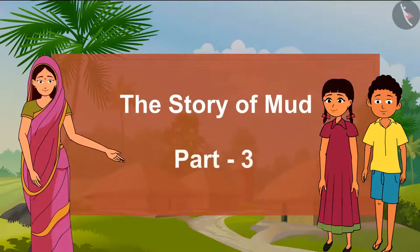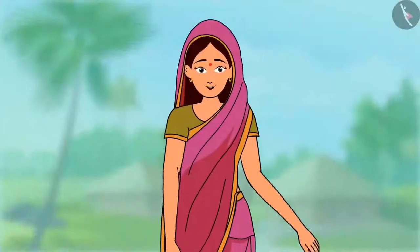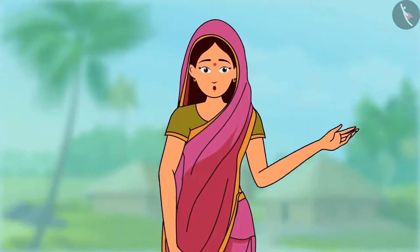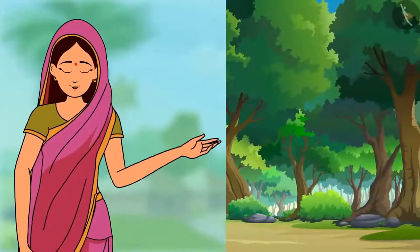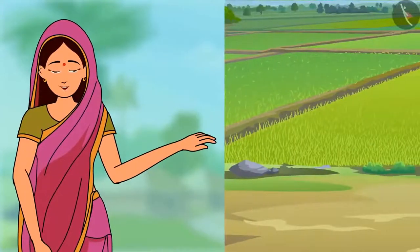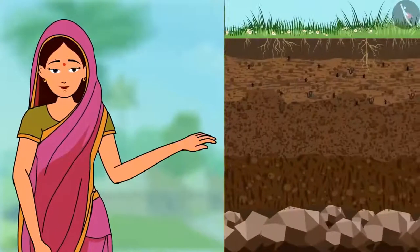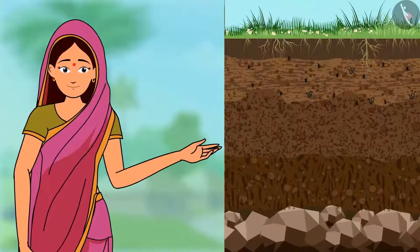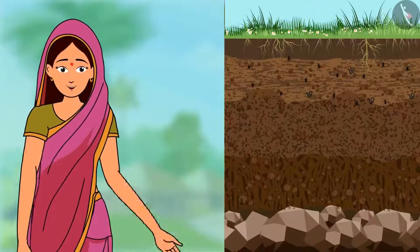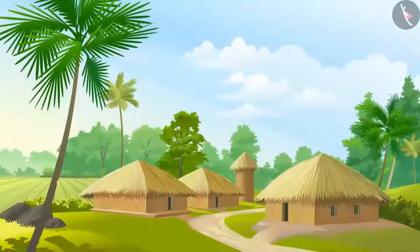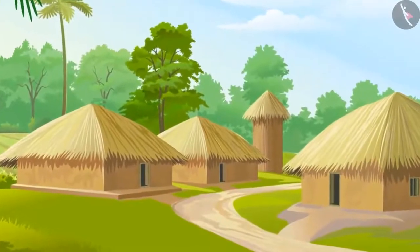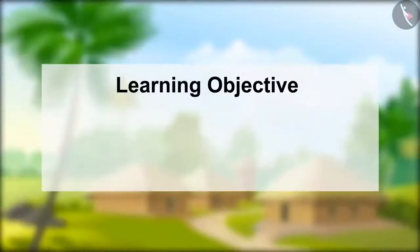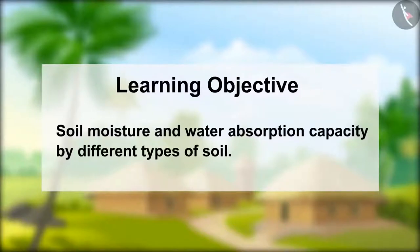The story of mud, part three. In the previous video you had learned about soil properties — soil is the elixir of life. Without soil, trees and plants cannot grow nor can a farmer cultivate. We also learned that there are minerals, stones, and insects in the soil. In this video we will learn some more aspects of soil. The objective is to know about soil moisture and water absorption capacity by different types of soil. Let me take you to Wayanad in Kerala, where Biju is playing in the mud with his sister Sheena.